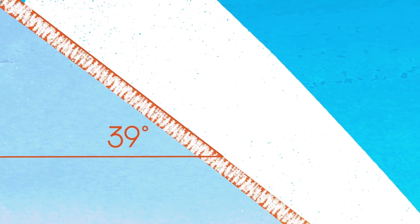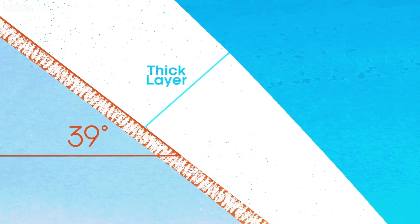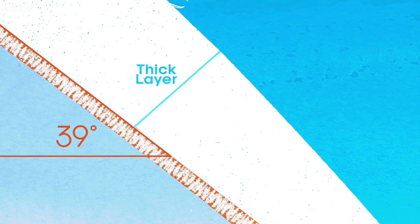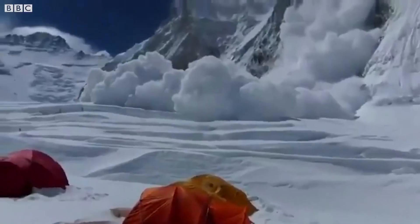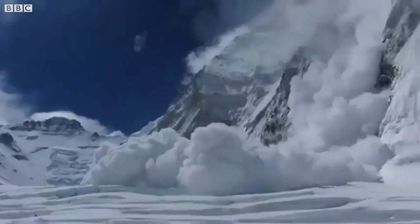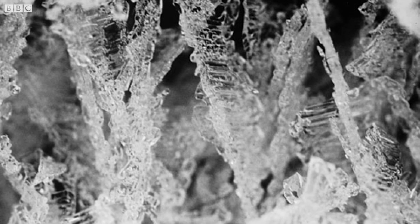Of course, there are a few other ingredients that contribute. The angle of the slope is important — about 39 degrees is the avalanche sweet spot. A thick layer of snow on top. And also, we need some type of trigger. And usually, that's us: regular humans who trigger 90% of all avalanche disasters. But still, the most important ingredient of all is that invisible weak layer — the hidden killer below the surface.